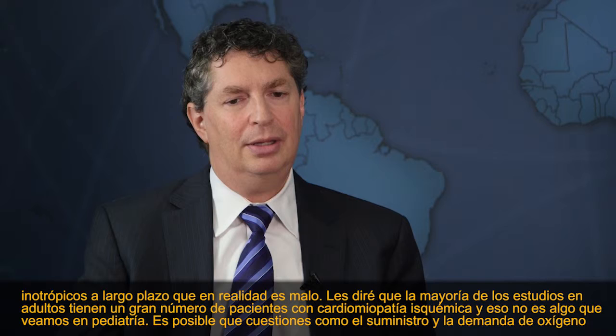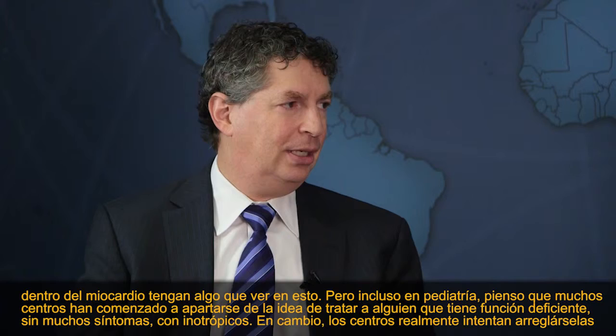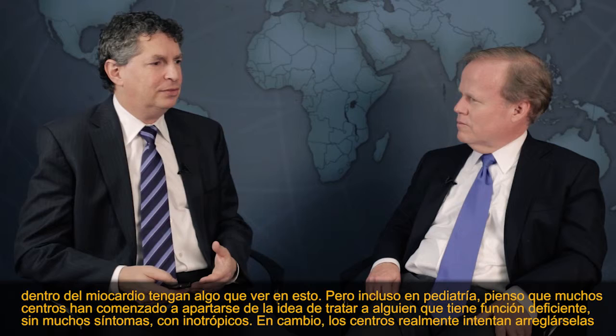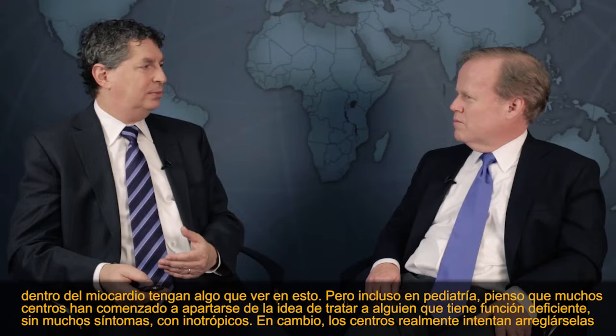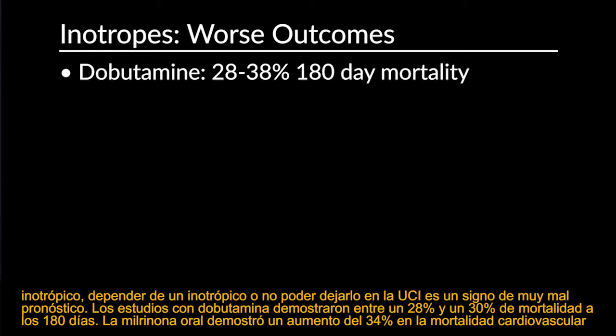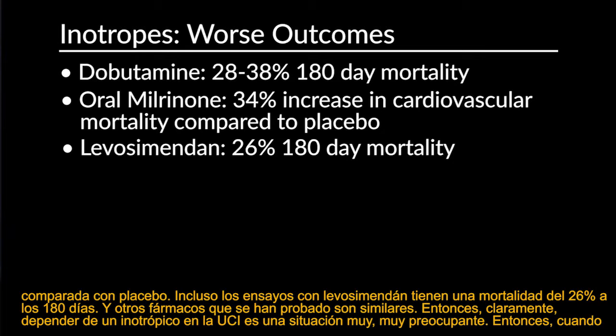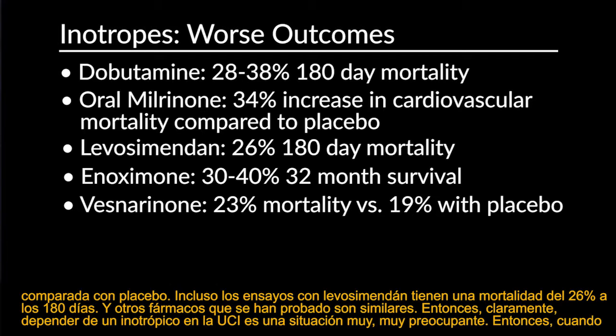Most adult studies include many ischemic cardiomyopathy patients, which is uncommon in pediatrics. But even in pediatrics, many centers have moved away from treating patients with poor function but minimal symptoms with inotropes — preferring diuretics and stable heart failure drugs. Inotropes are used only for clear short-term low cardiac output situations. Being stuck on an inotrope in the ICU is a very bad prognostic sign. Dobutamine trials show 28-30% 180-day mortality; oral milrinone shows 34% increase in cardiovascular mortality vs. placebo; even levosimendan trials show 26% 180-day mortality.